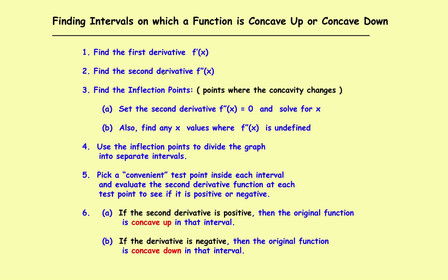We'll follow almost exactly the same series of steps as before. First, find the first derivative, then find the second derivative. Next, set the second derivative equal to zero and solve — that gives you the inflection points, which are where the concavity changes. Use those inflection points to divide the graph up into separate intervals. Then pick a convenient test point inside each interval and evaluate the second derivative. If the second derivative is positive, the function is concave up; if it's negative, the function is concave down.